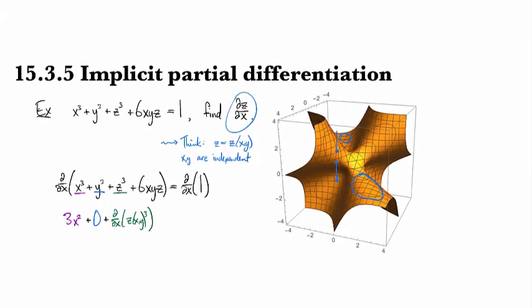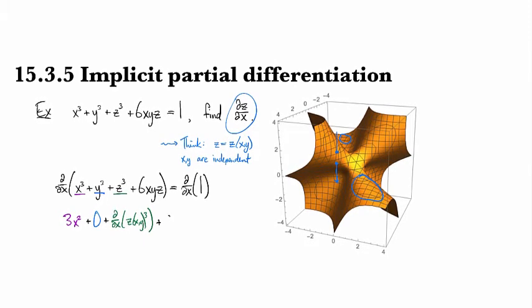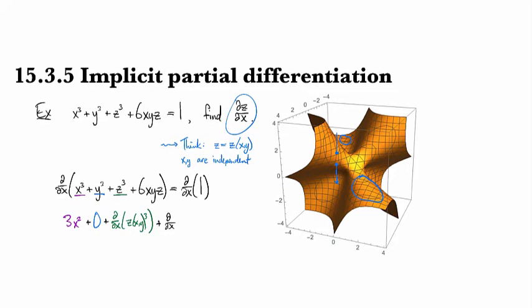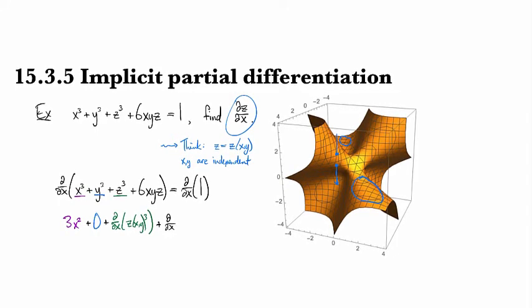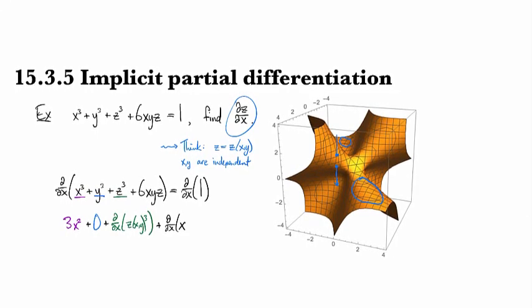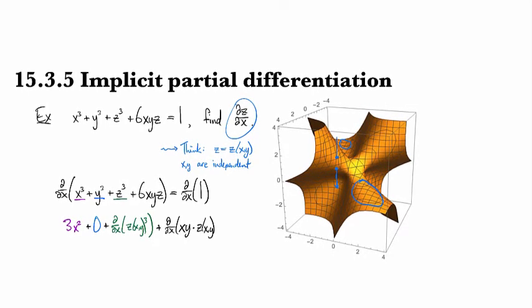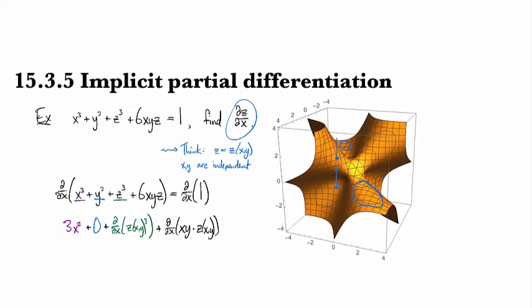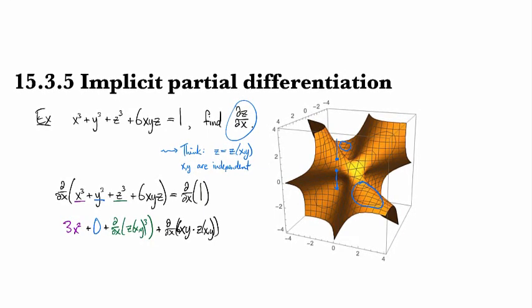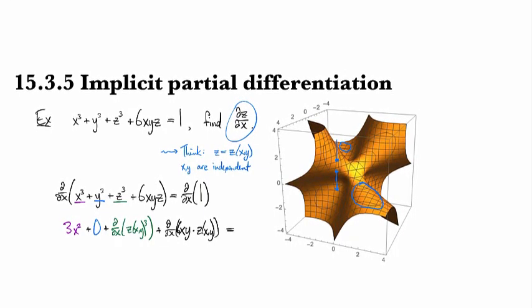So these are the things that we're adding together. And then we've also got the partial derivative with respect to x of 6xy times z(x,y). And I forgot a 6. Let's stick the 6 in there. And then on the right-hand side, you've got a zero.